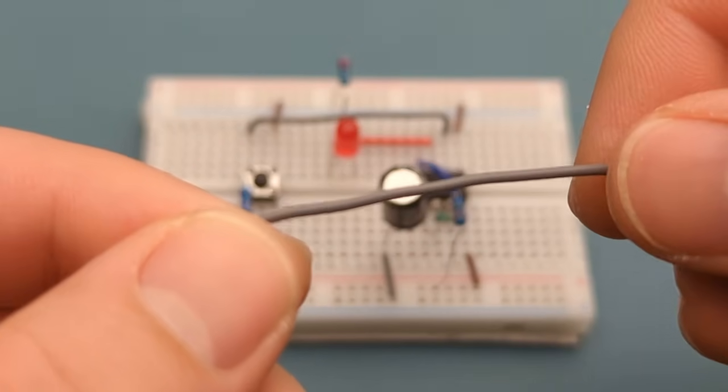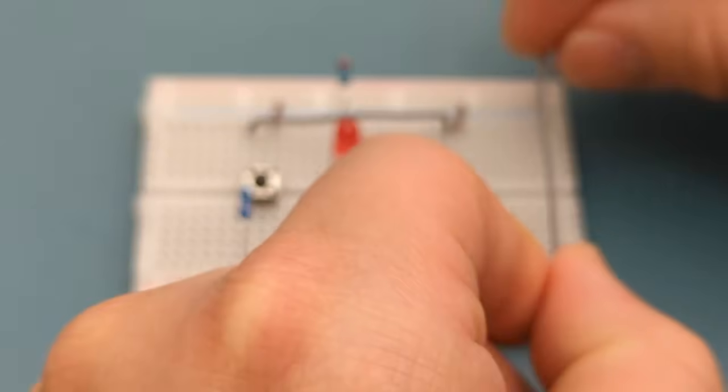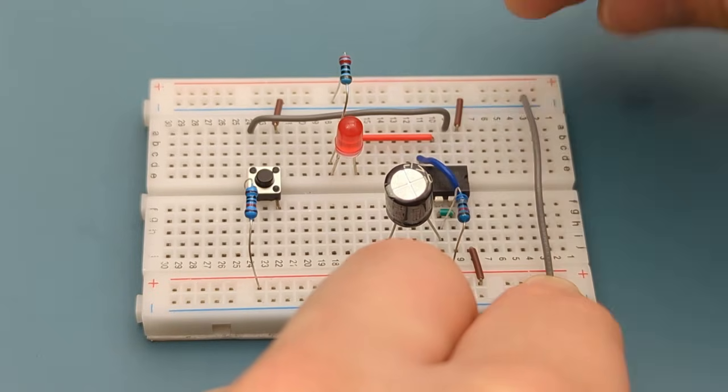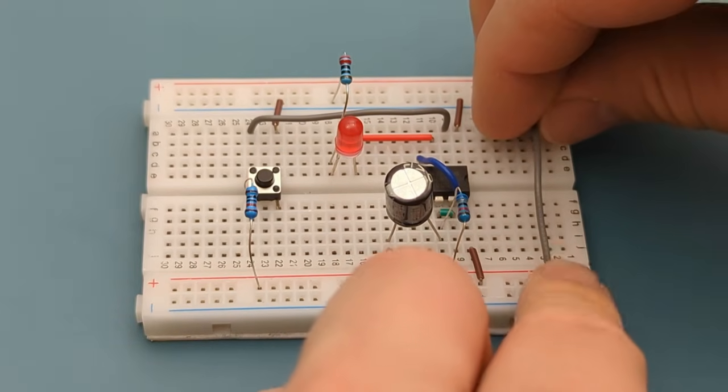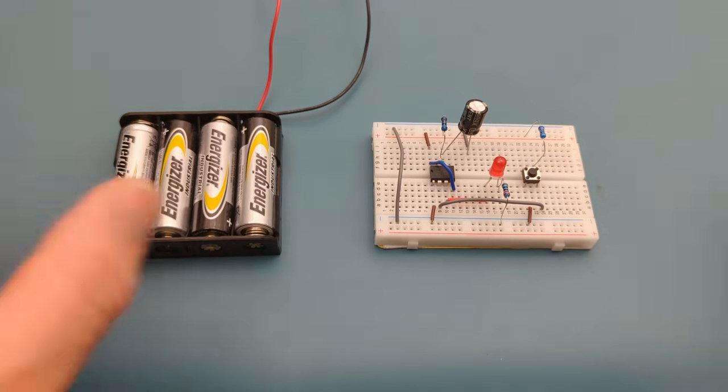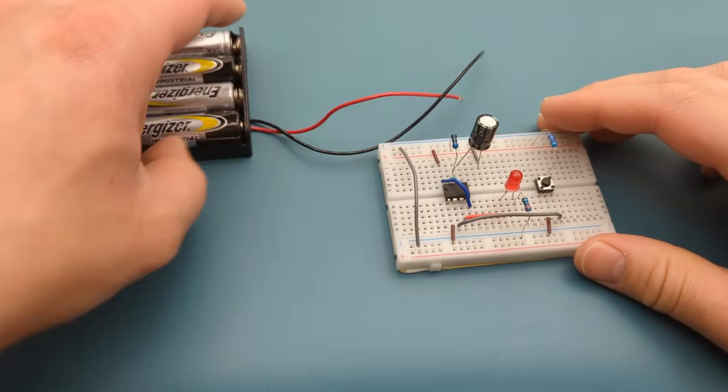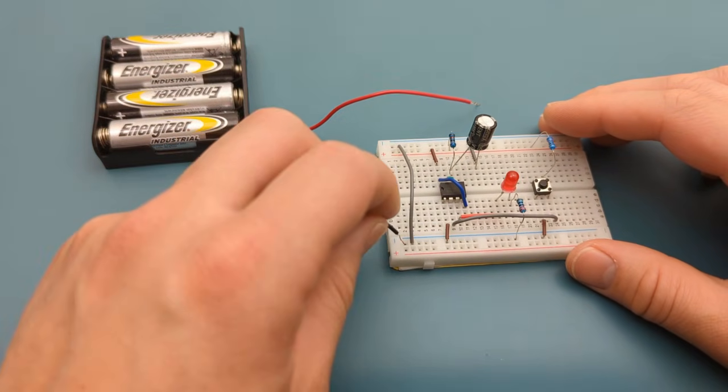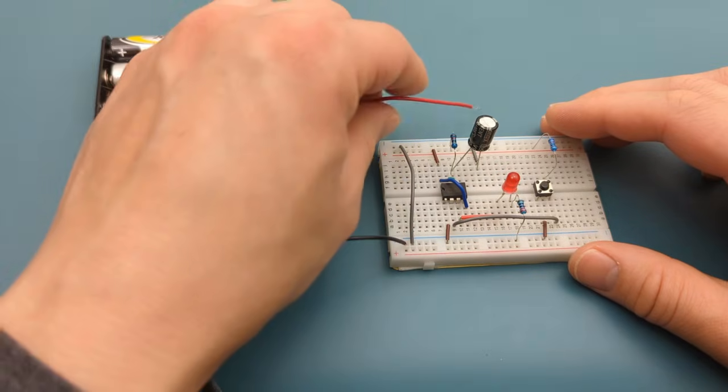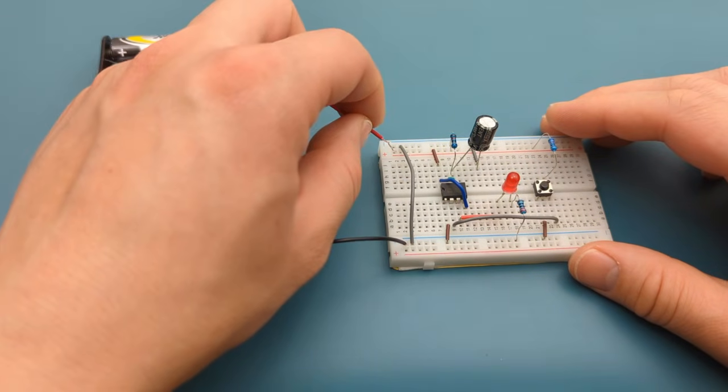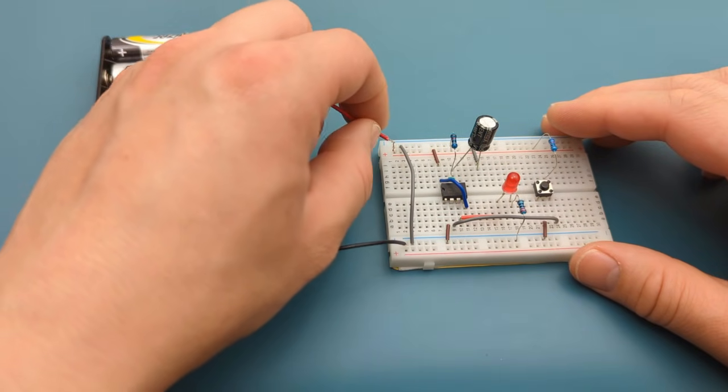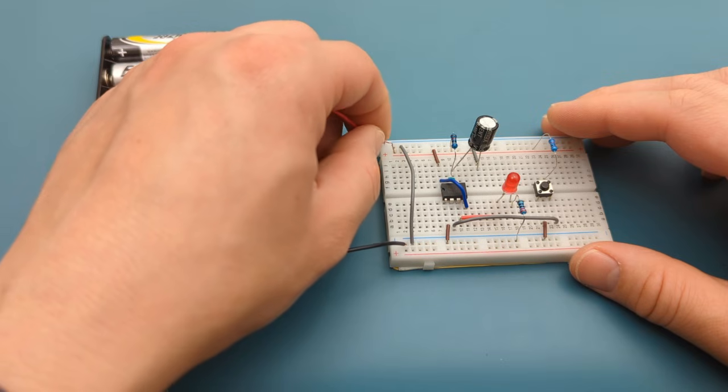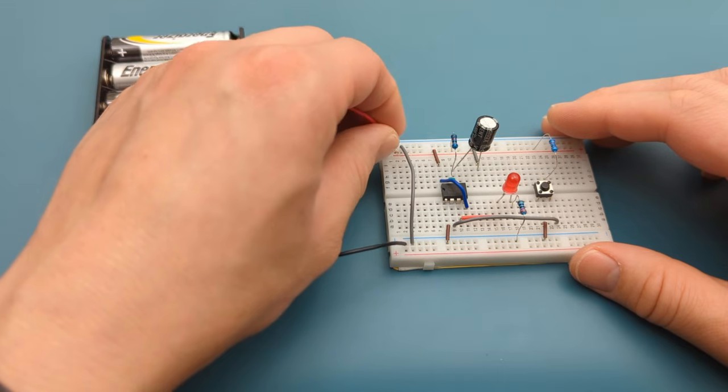Use a jumper wire to connect both ends of the negative rails together. It's time to connect the power supply. Attach the negative lead from the battery holder to the negative rail. Attach the positive lead from the battery holder to the positive rail. We have successfully completed the circuit.